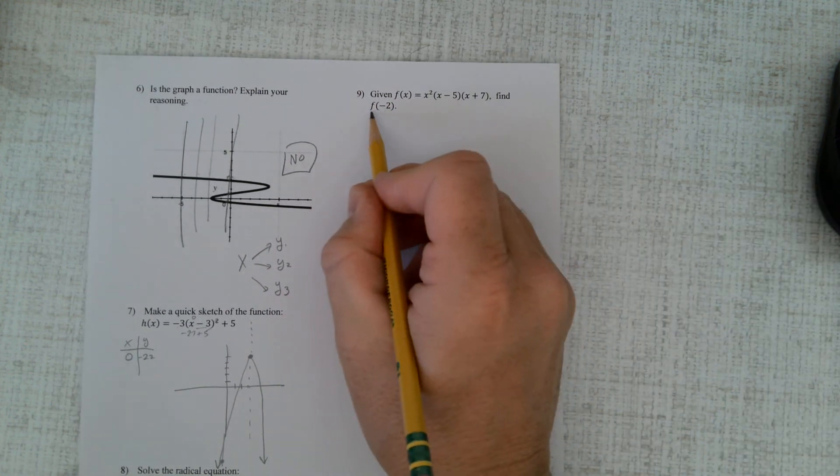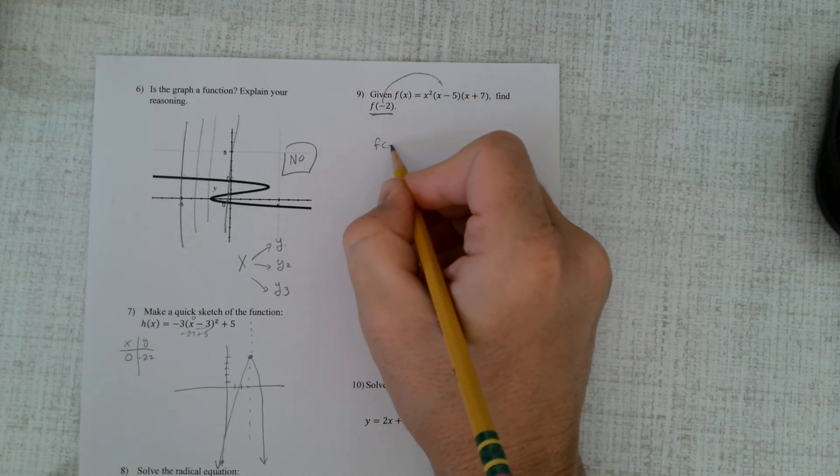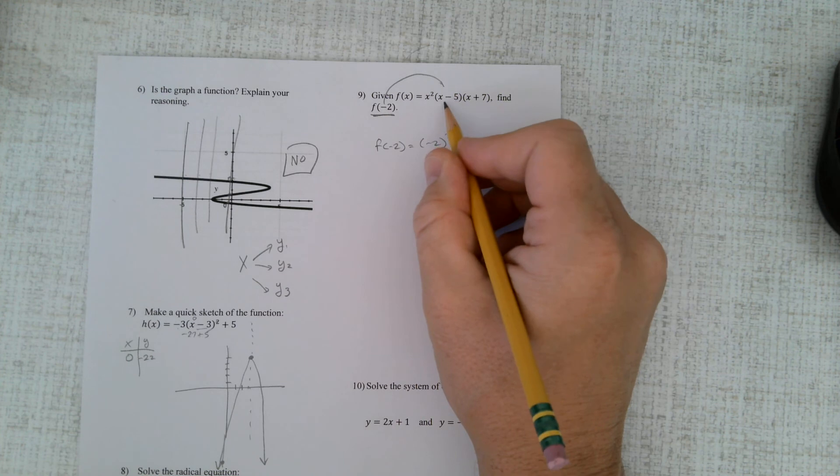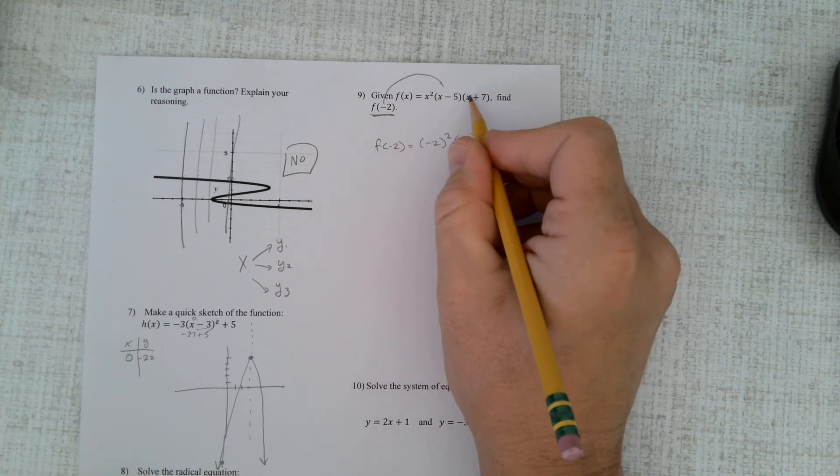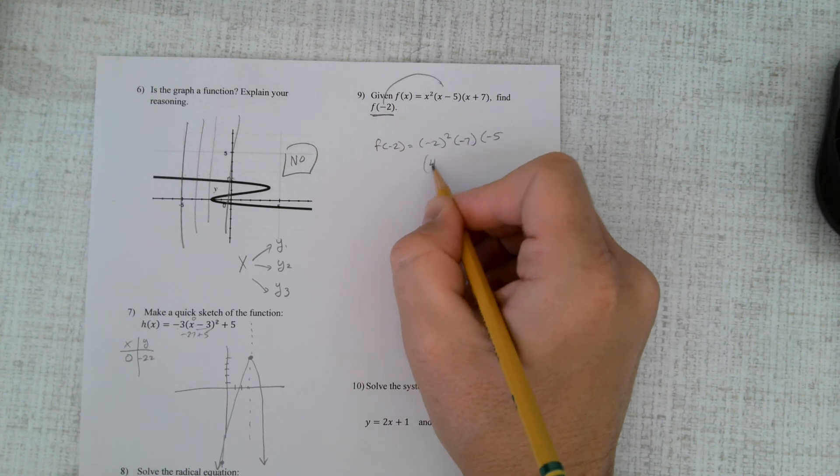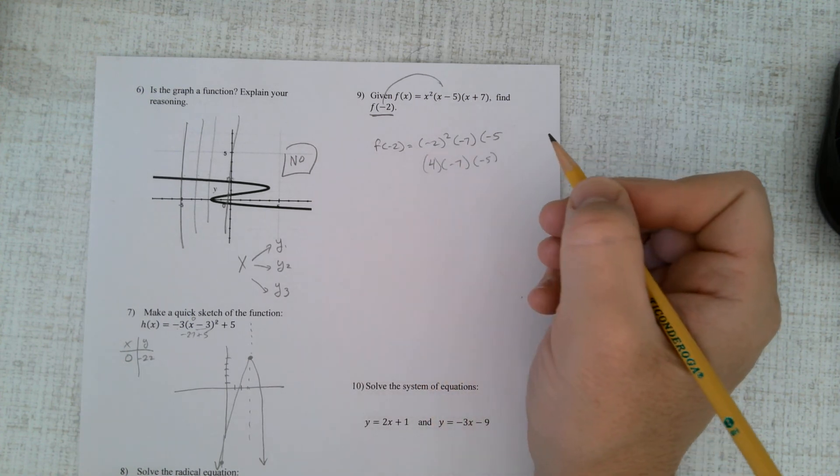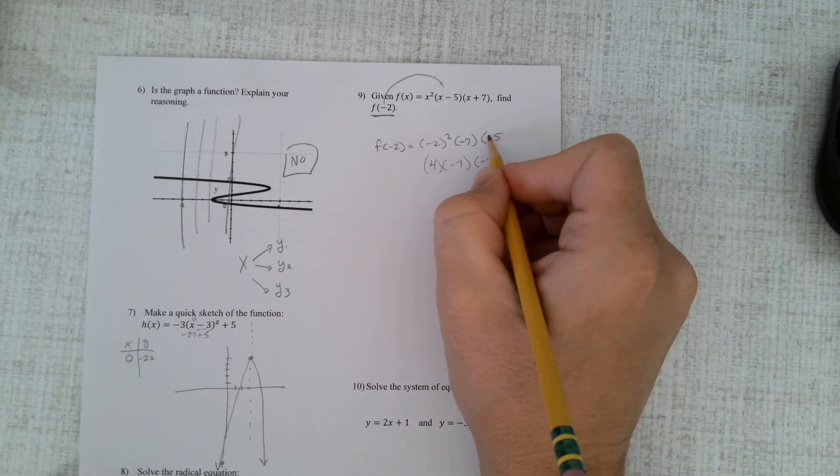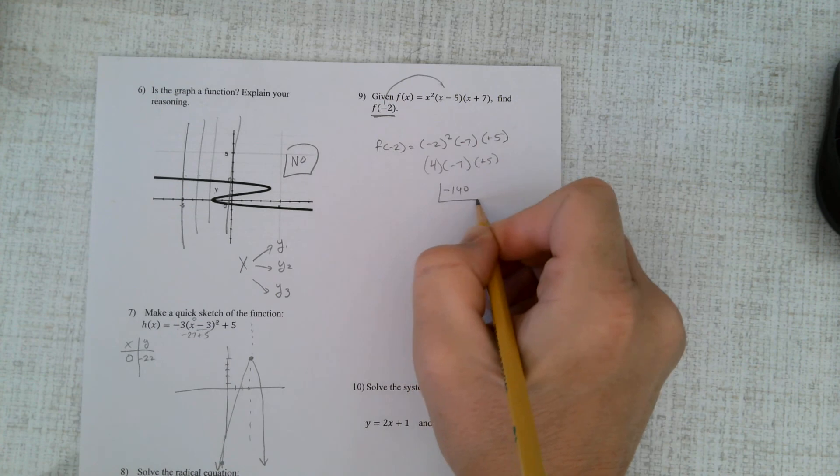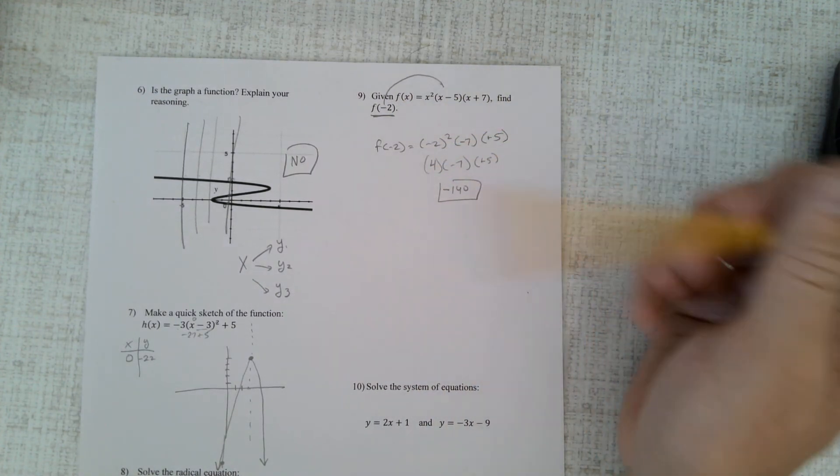Given the function find f(-2), well, that simply means we plug in -2. So f(-2) would be (-2)². -2 there would be -7. -2 there would be 5. 4 times -7 times 5. Oops, that's a positive 5 at the end there. And if you do that correctly, I believe you have 140. So this looks like a confusing problem, but it just means plug that number in there.